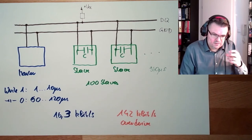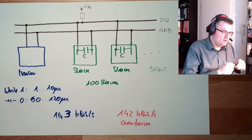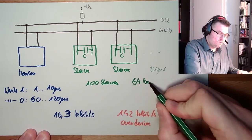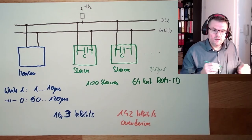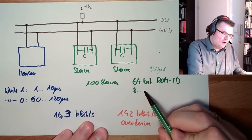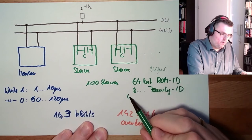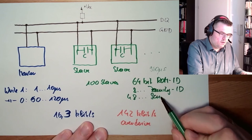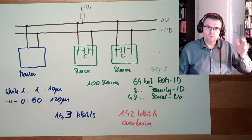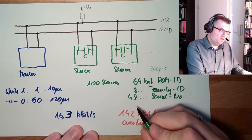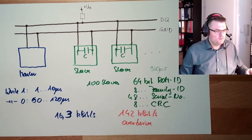They do have an address, a so-called ROM ID. 64-bit. 64-bit ROM ID. And eight of these bits are family, family ID. Then there are 48 bits, serial number. And then we are at 56. What are the missing eight bits? The missing eight bits are a checksum, CRC checksum, to see if this is correct.